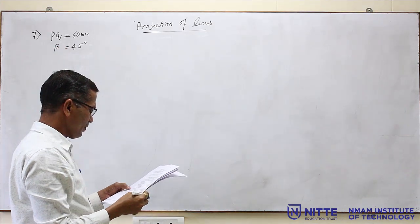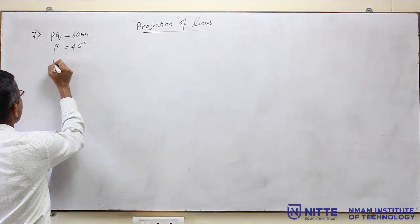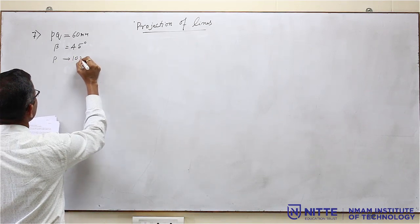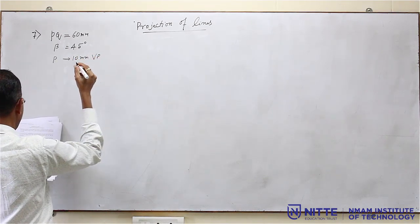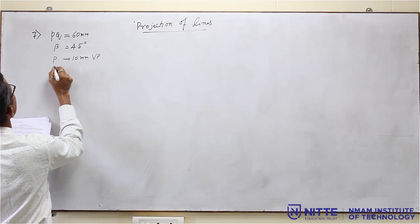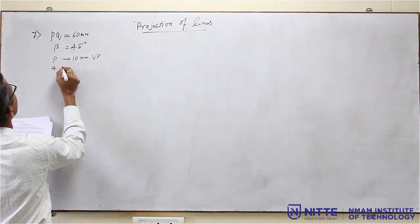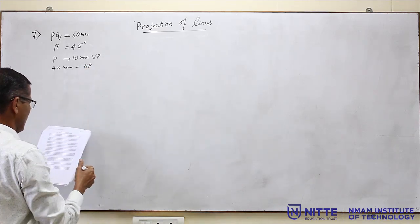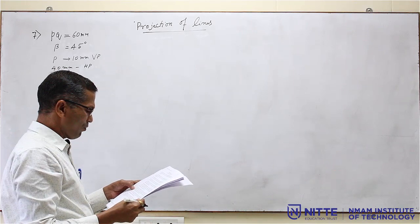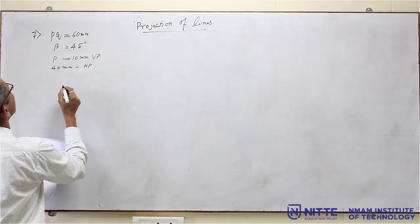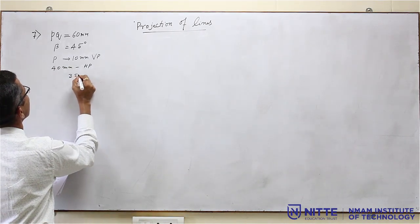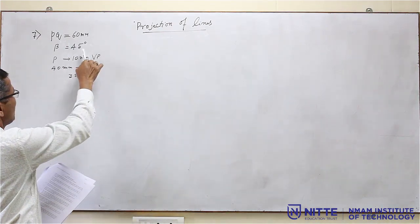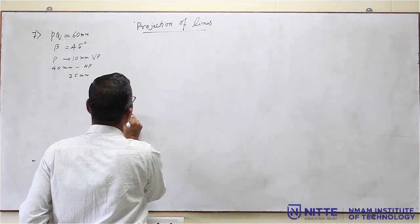This is beta. The end P is 10mm in front of VP and 40mm above HP. The difference between the distance of P and Q above HP is 35mm. These are the given information. So first, draw the XY line.